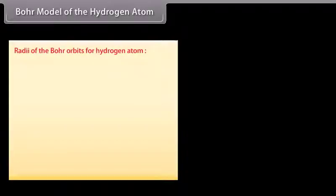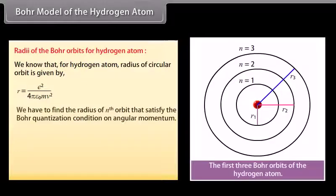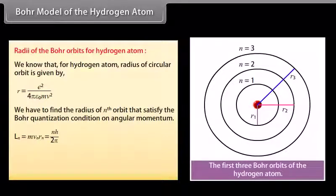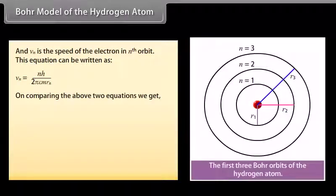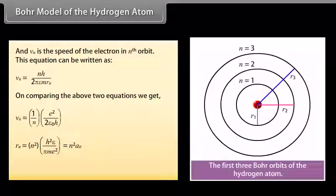For the hydrogen atom, the radius of a circular orbit is given by e²/(4πε₀mv²). To find the radius of the nth orbit satisfying Bohr's quantization condition: L_n = mv_n r_n = nh/2π, where n = 1, 2, 3, and so on, and v_n is the speed of the electron in the nth orbit. This gives v_n = (1/n) × e²/(2ε₀h), and r_n = n² × (h²ε₀)/(πme²) = n²a₀, where a₀ = 0.529 Å is the Bohr radius.